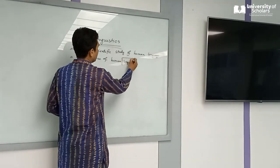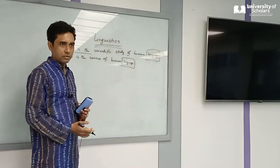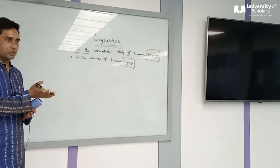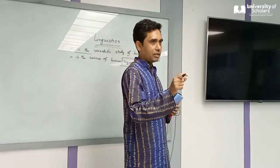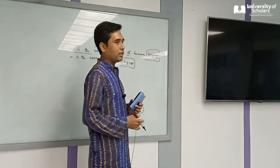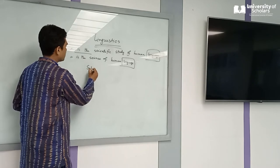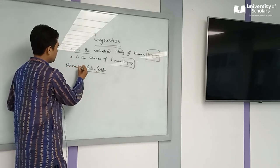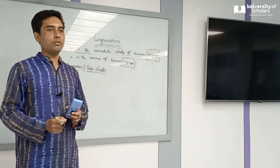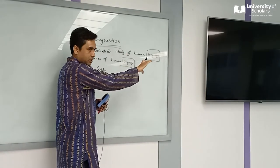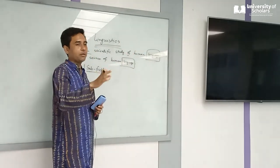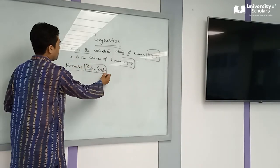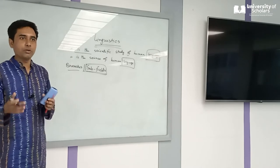The main element of linguistics is language, and language has so many features. Last class, we talked about language having so many segments. Language has sounds, language has structures — word structure, sentence structure — and language has meaning. So accordingly, there are different subfields, or branches, of linguistics. That means language areas: language has a sound area, a structural area — word and sentence — and language has meaning.